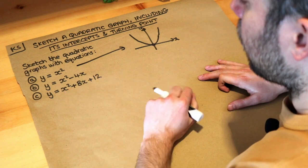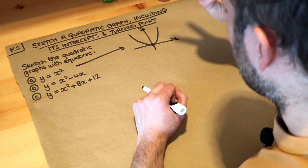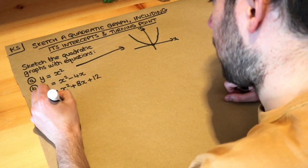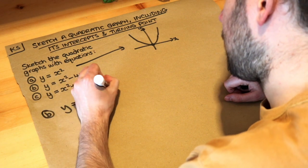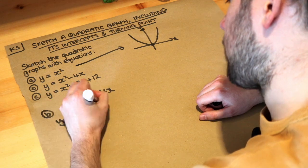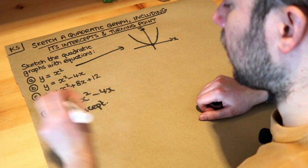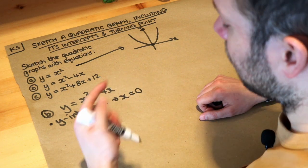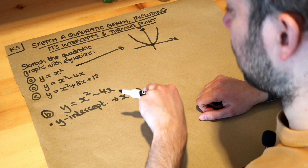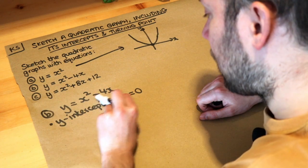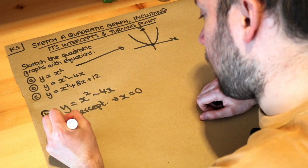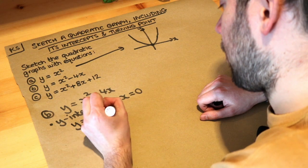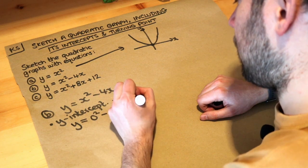For these other two we're going to find the x-intercepts, the y-intercepts, and the turning point. Let's do part b: y equals x squared minus 4x. Let's first find the y-intercept. To find the y-intercept you let x equal zero, so substituting gives y equals zero squared minus 4 times zero, which equals zero.